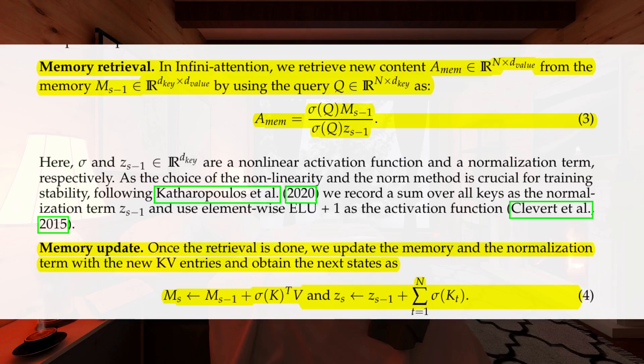Implementation considerations for deep learning engineers. Compressive memory implementation: Implementing the associative memory matrix and its update-retrieval mechanisms would be crucial. Libraries like TensorFlow or PyTorch can be used to build and train these components.